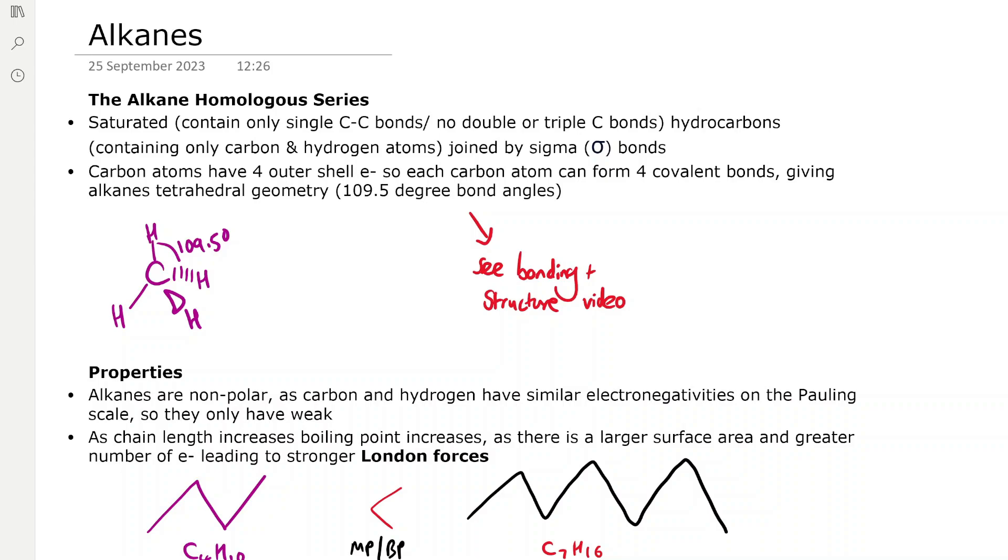Carbon atoms have four outer shell electrons so each carbon atom can form four covalent bonds, giving alkanes tetrahedral geometry with 109.5 degree bond angles.